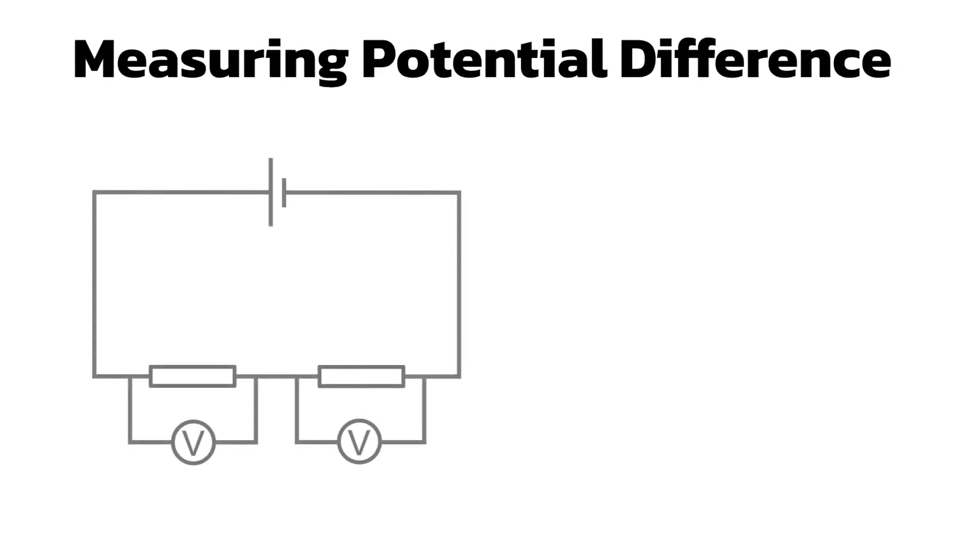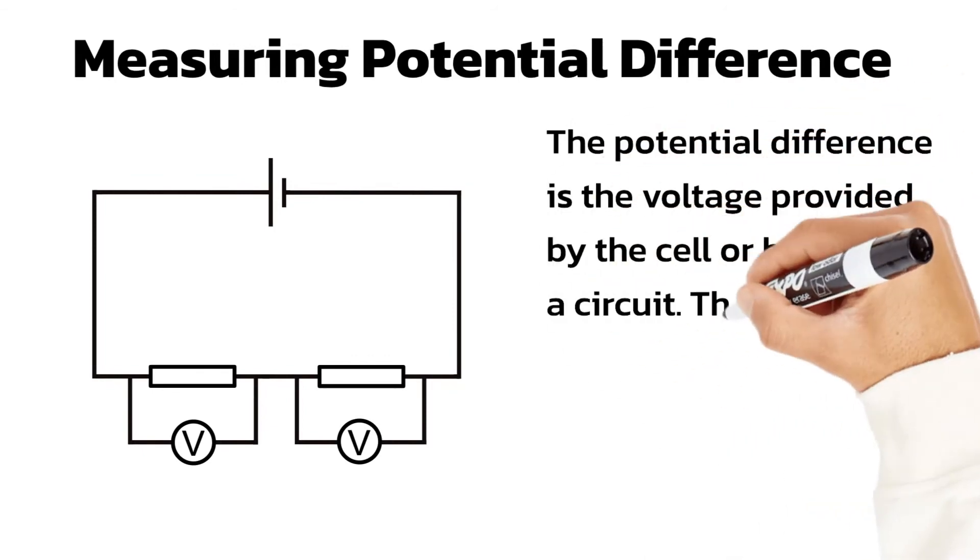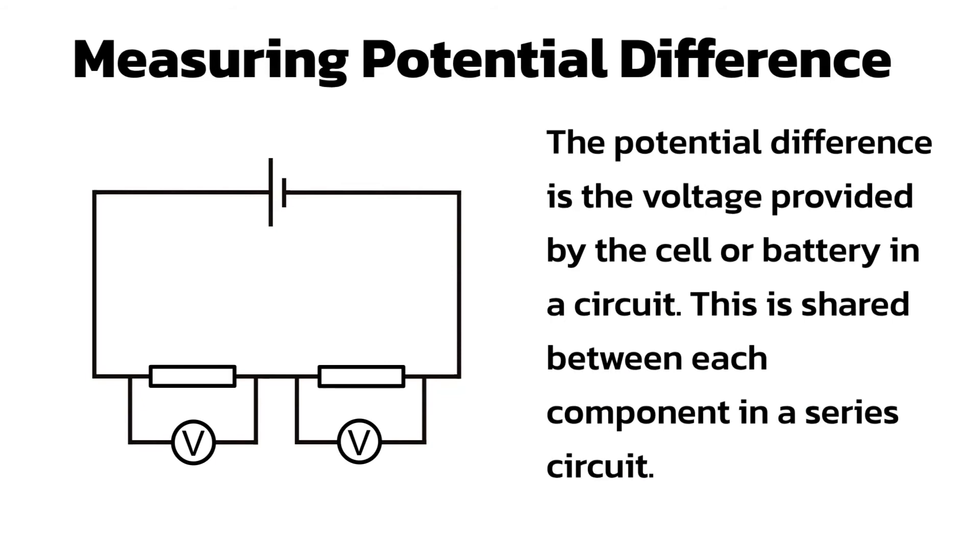The potential difference is the voltage in the circuit. The potential difference provided by the cell or battery is shared between each component in a series circuit.